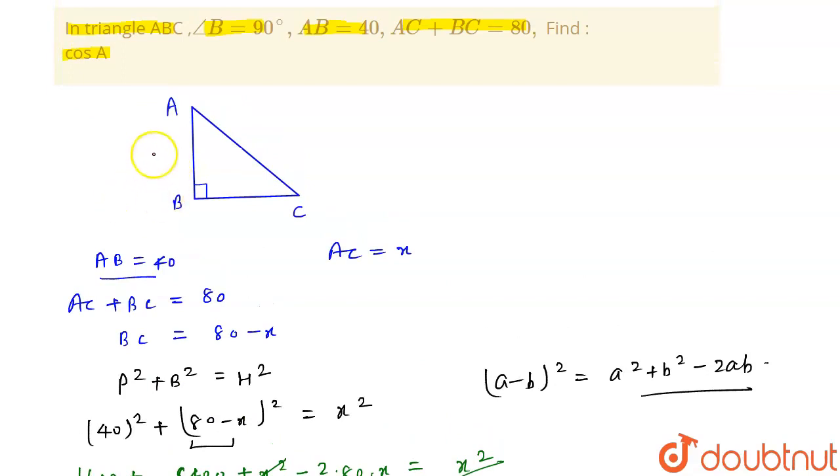Now we come to the triangle, so we will see here that AB equal to 40, AC equal to 50, and BC equal to 80 minus 50, that is equal to 30.